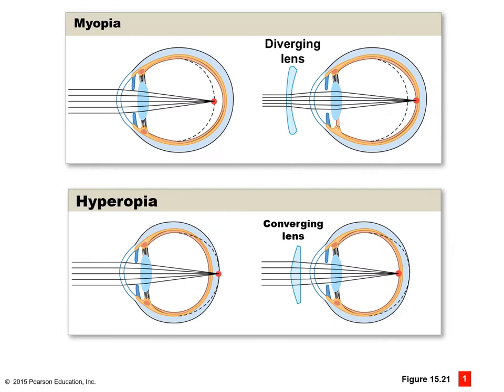There are two conditions associated with focusing problems. Myopia is nearsightedness, characterized by a focal distance that is too short — we can't focus on distant objects. Here we use a diverging or concave lens to spread light rays apart. Hyperopia is farsightedness — the focal distance is too long, and we're better at focusing on distant objects. We use a convergent or convex lens to bend light rays more onto the retina.